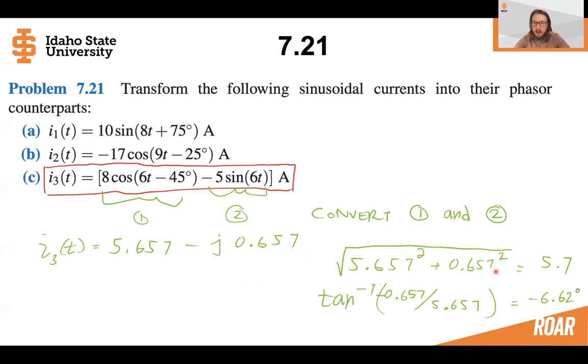And if you don't, if you are doing it the hard way, you would calculate both the magnitude and the phase. But you should be able to press a button on your calculator for it to quickly convert this for you so that you would arrive at being able to see that the phasor is equal to 5.7 e to the minus j 6.62.